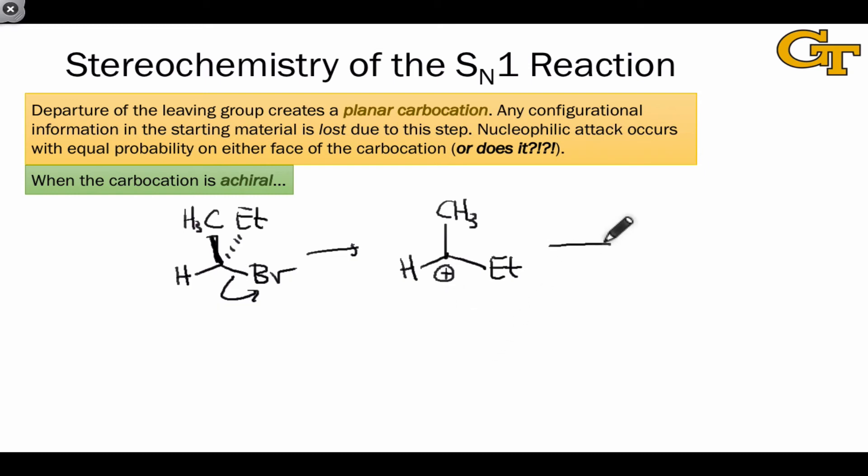This leads to a scrambling of configurations in the product. This is often drawn using a wavy bond to the nucleophile to indicate a mixture of configurations. And this is the typical situation when the carbocation is achiral.